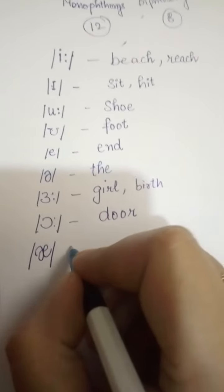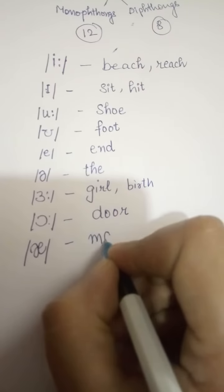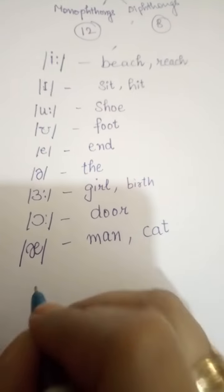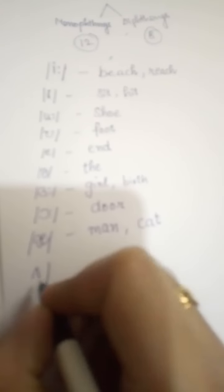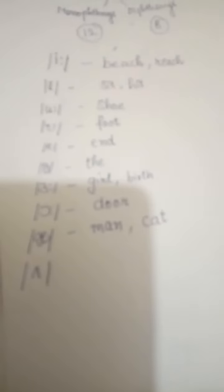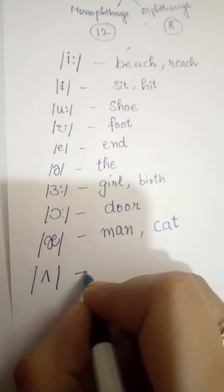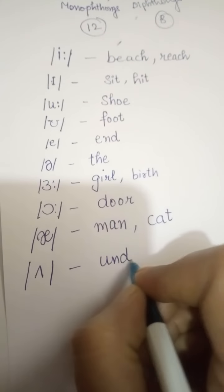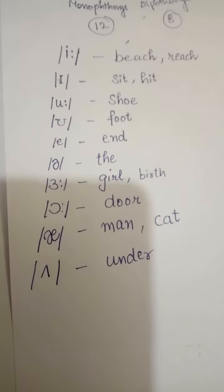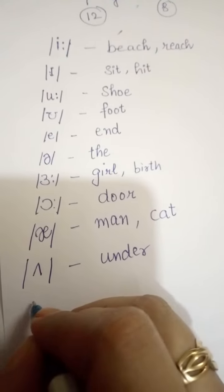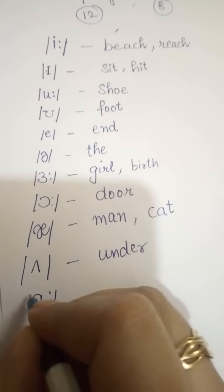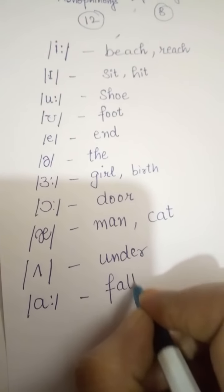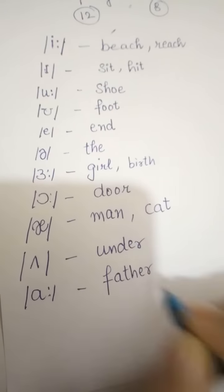Next is the 'a' sound as in 'man' and 'cat.' Then there is the 'uh' sound as in 'under' and 'thunder.' The next sound is the broad 'a' as in 'father.'